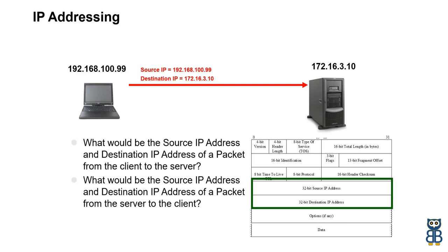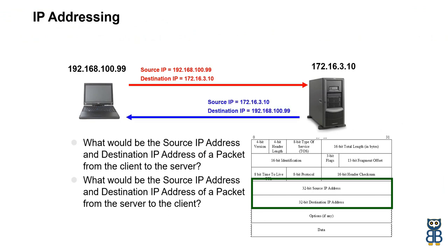When a client wants to communicate with the server, it uses its own IP address in the source field and the server's IP address in the destination field. The same method applies when the server communicates to the client — the server uses its own IP address in the source field and the client's IP address in the destination field.